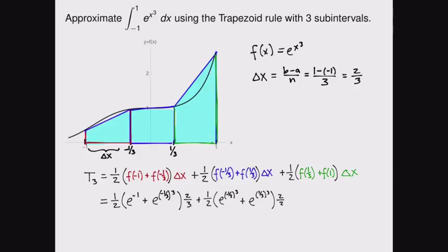That's because each of these trapezoids shares an edge. So we're going to use the same height over and over. And again, delta x is two-thirds. The last trapezoid. And e to the one cubed is e to the one times the height. So this is our value.